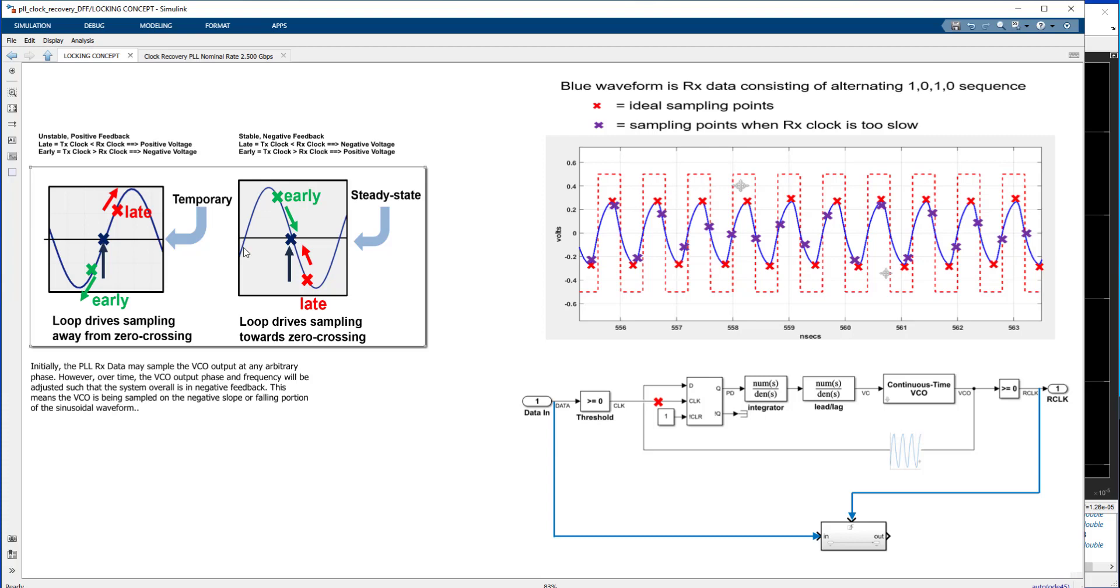Now, the ambiguity in this scheme is that there are two zero crossings in a sinusoidal waveform. You've got the positive going zero crossing edge, the rising slope, and you've got the falling side of the sinusoid. And depending on whether you're sampling on the rising or falling edge of the sinusoid, you're going to get different flip-flop voltages depending on whether you're sampling too early or sampling too late.